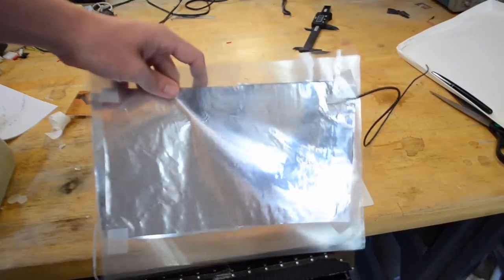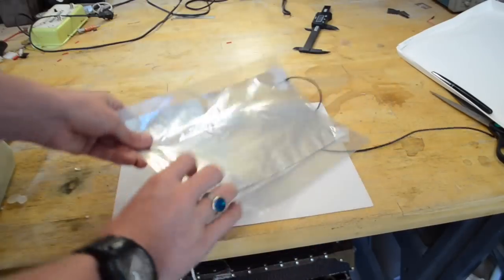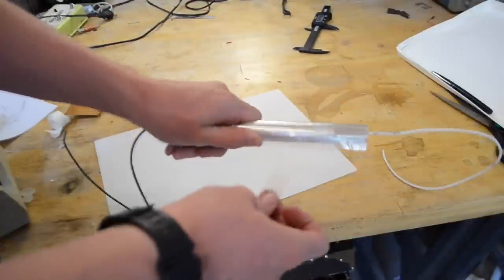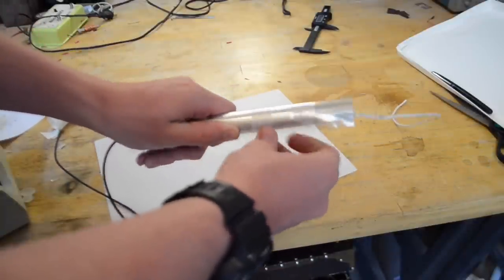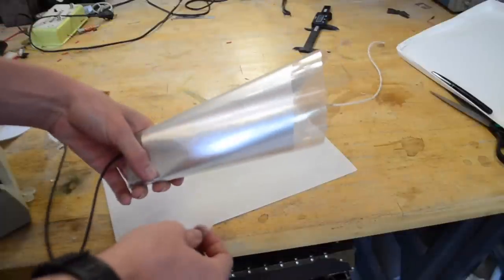Now that we have all that done, you should have something that looks somewhat like this. Go ahead and tap it down to make sure all the corners are lined up, and give it a tight roll. When you're done rolling it, go ahead and add some tape to make sure it doesn't unravel.